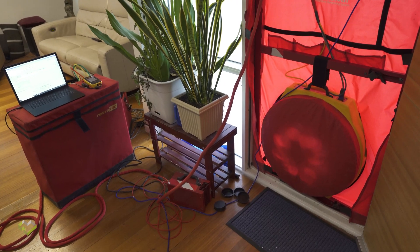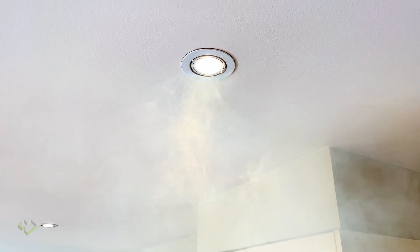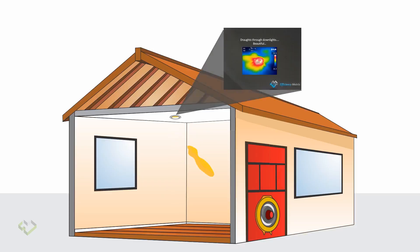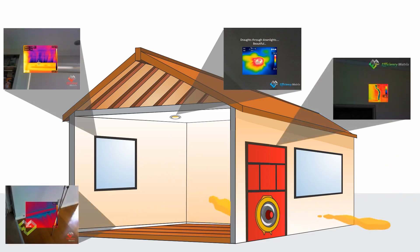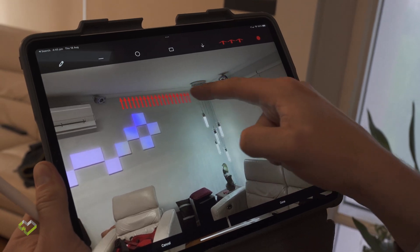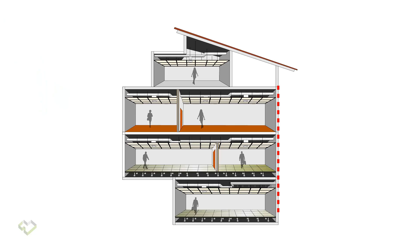With an air tightness test, especially in negative pressure, we can force air out of all the gaps and holes within the building envelope to find issues, but also document where those issues are. With that total airflow through the building envelope, we can then quantify how airtight a building envelope is — represented either as an air change per hour value at 50 Pa, or a permeability rate, which is how leaky every square meter of the building envelope is.